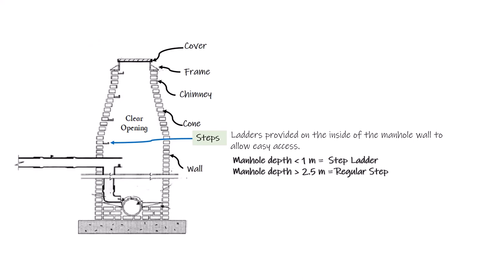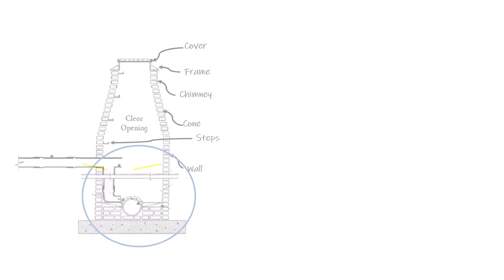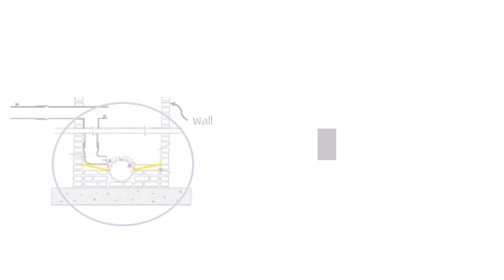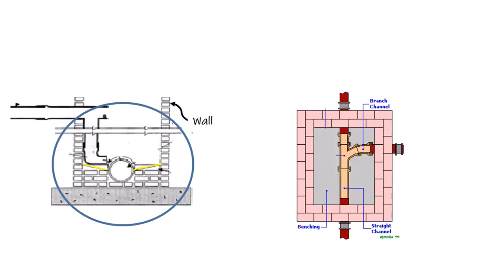Number seven: the channel of a manhole. A channel is a conduit located at the bottom of the manhole to let water or sewage pass through from the manhole inlet to the outlet, as more clearly explained in the figure.